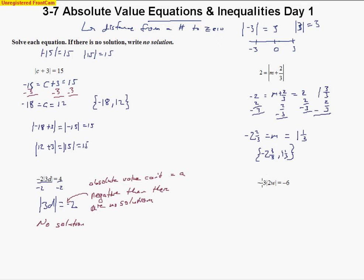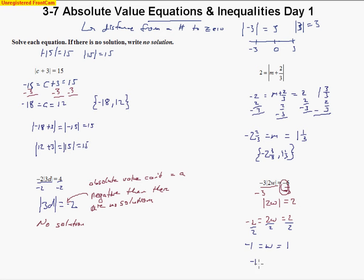The next one looks similar, but when we divide by negative 3, the two negative signs cancel each other out, leaving the absolute value of 2W equal to positive 2. Now we can solve. We set 2W equal to 2 and negative 2, divide by 2, and get W = 1 and W = −1 as our two solutions. Plugging them in and multiplying by 2 gives either 2 or negative 2, and multiplying by negative 3 gives negative 6 every time.